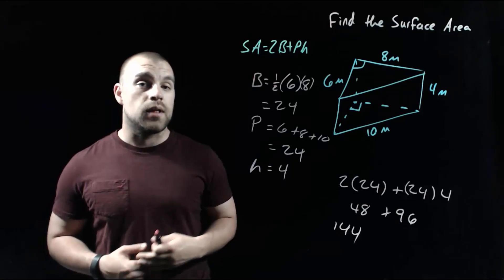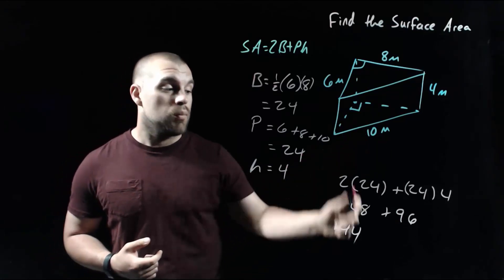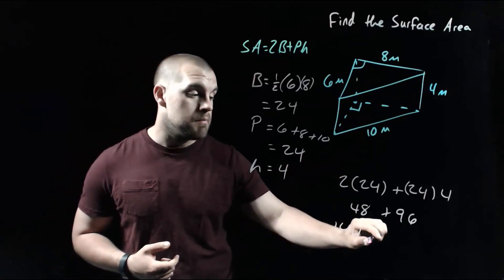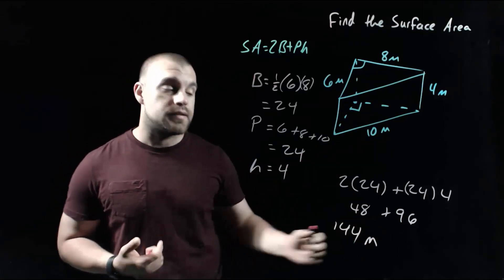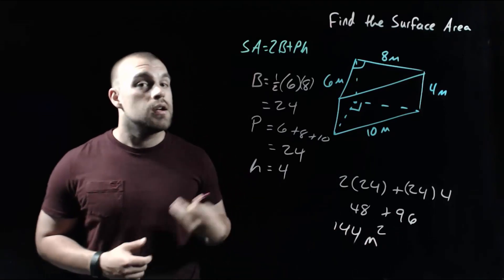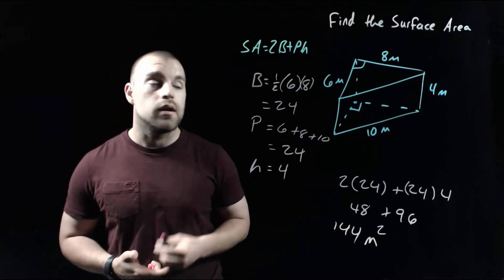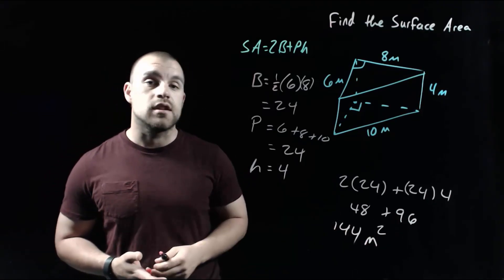We do need to throw a label on this since it's an area problem. We were measuring in meters, and since it's area, that gets a squared on it. So 144 meters squared is the surface area of this prism.